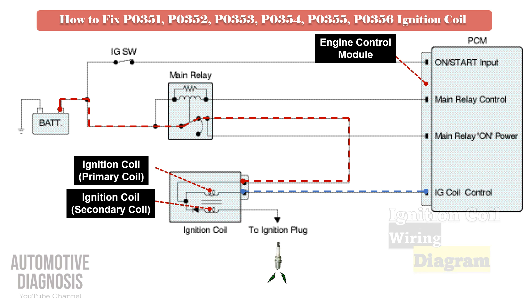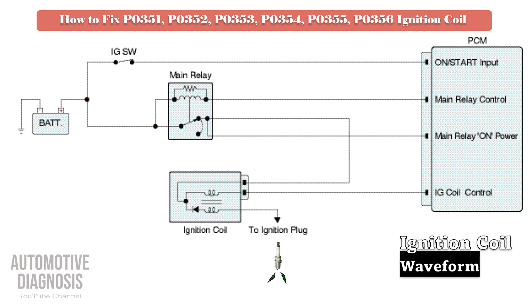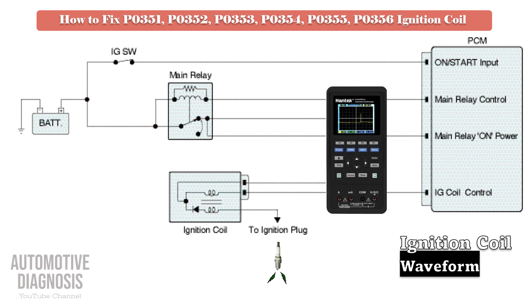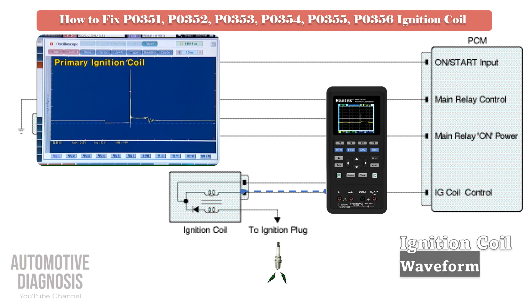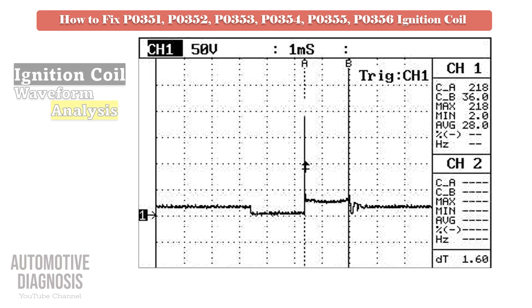Before removing the ignition coils, you can check the waveform of them to see if they work correctly — you can also get some more information through the waveform. To get this waveform, you must use an oscilloscope. You can only get the waveform from the primary coil circuit, specifically from the control line as shown here.